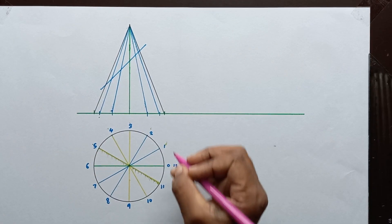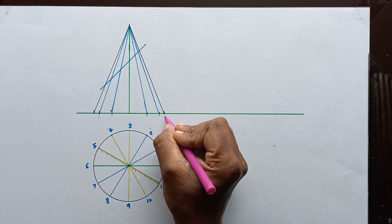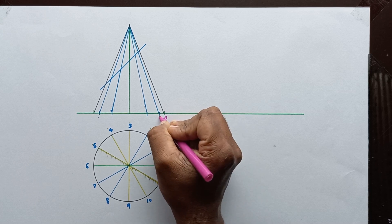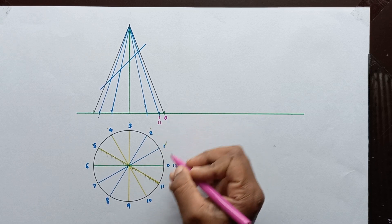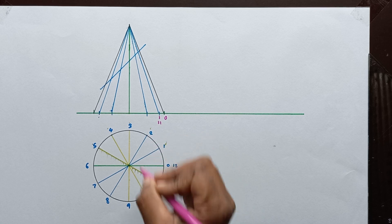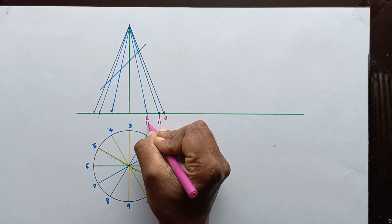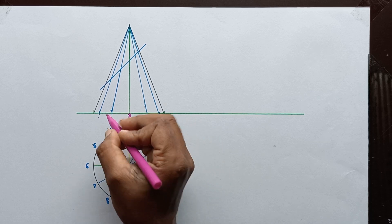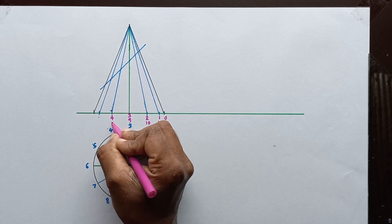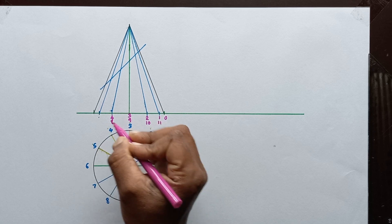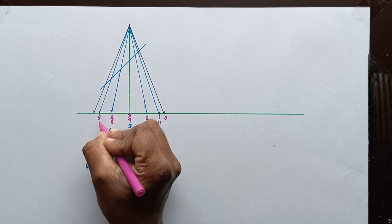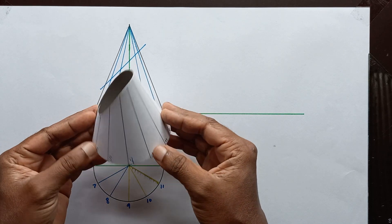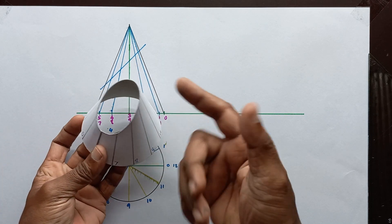Let's number these points as well. Here point zero, point one and eleven — they are coinciding — point two and ten, here point three and nine, here four and eight, five and seven, and here number six. This is the 3D shape of the truncated cone; here you can see the cutting plane.